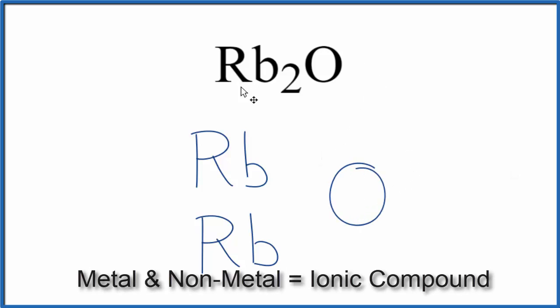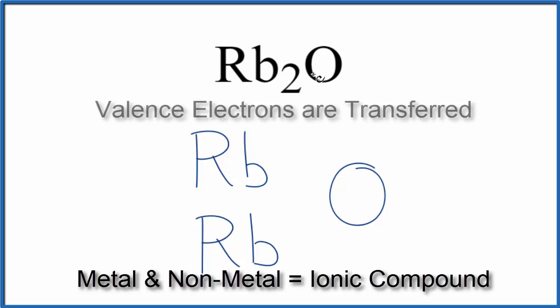So rubidium, that's a metal. Oxygen is a non-metal. When we have a metal and a non-metal, we have an ionic compound, and the electrons will be transferred from the metal to the non-metal.